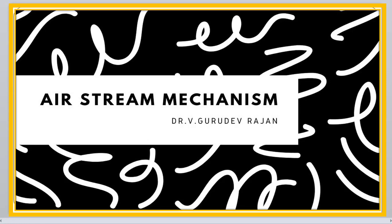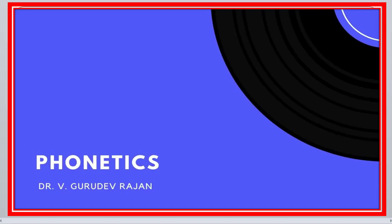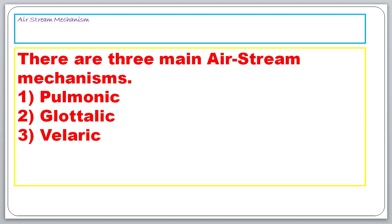This block is a summary of the previous two blocks and is named airstream mechanism. As the name implies, it talks about how the airstream flows and the mechanism involved. In the previous class we saw three systems involved in producing speech sound; now here we are seeing three mechanisms involved in producing speech sound.